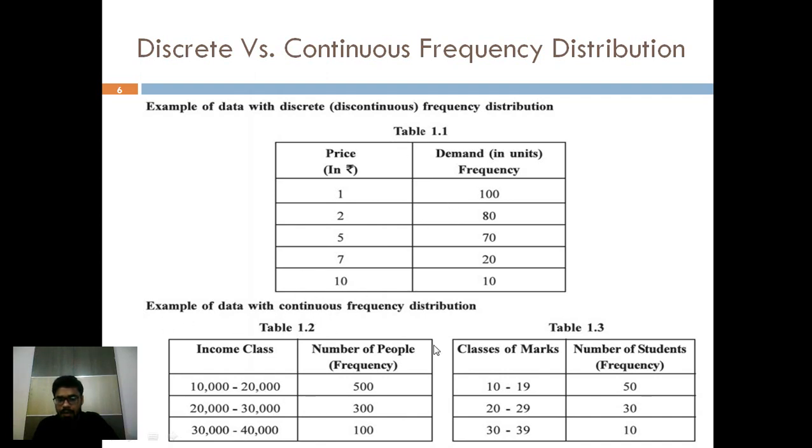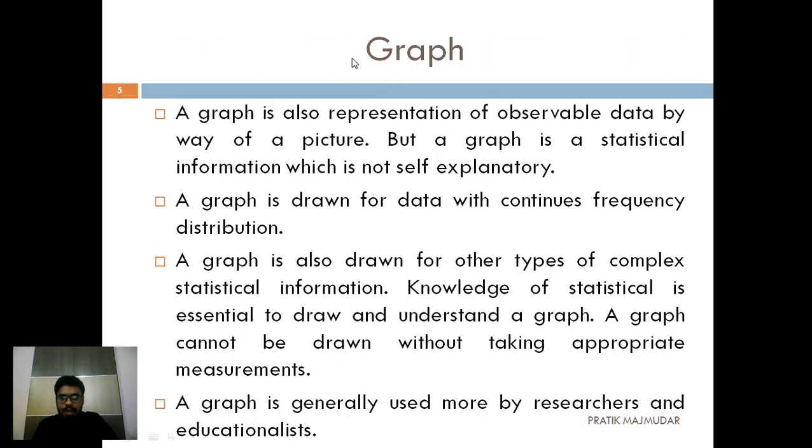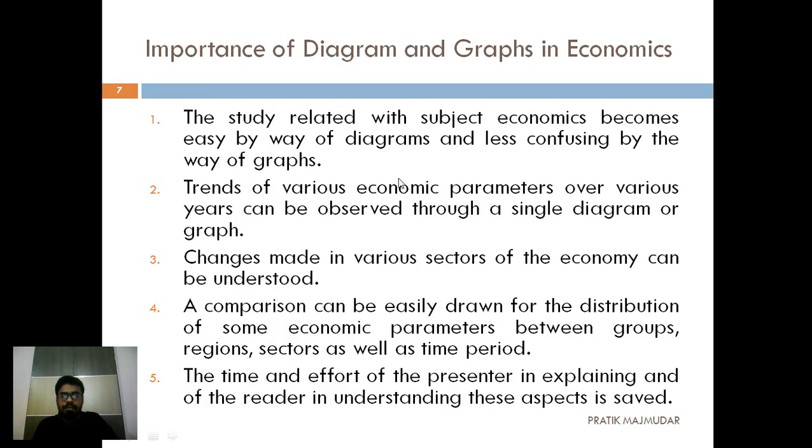When it comes to the graph, here the continuous frequency distribution are there. Let's take a class of income. If your income is between 10,000 to 20,000, you are here. 20 to 30, you are here. And 30 to 40, you are here. So that is for the continuous frequency distribution. Same way, when the marks are allocated, if you have scored between 10 to 19 marks, you are here. 20 to 29 marks, you are here. And 30 to 39 marks, that is 10 people are there. So when there is continuous frequency distribution, you are going to use the graphs. That means you should have the knowledge of statistics. That is mandatory in nature.